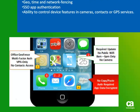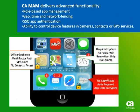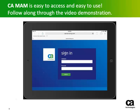CA MAM delivers advanced functionality: role-based app management, geotime and network fencing, app authentication, and the ability to control device features such as cameras, contacts, or GPS services. CA MAM is easy to access and easy to use.